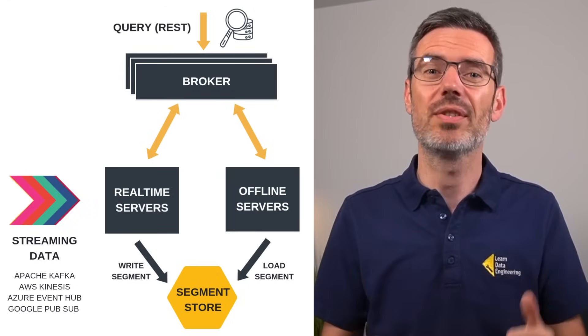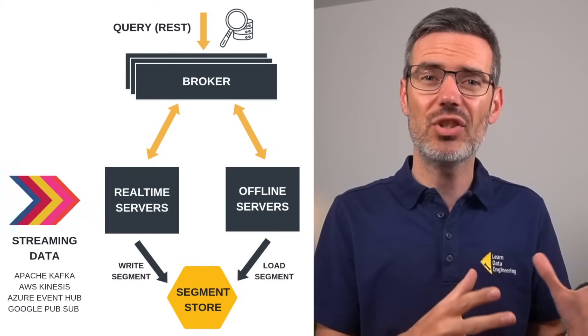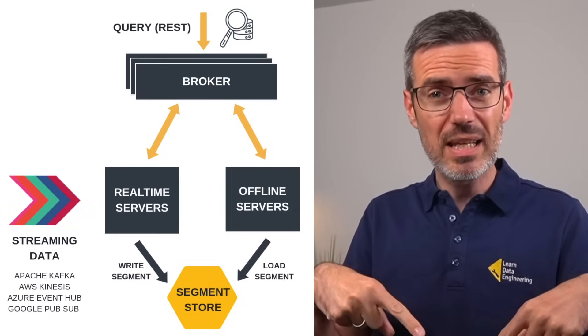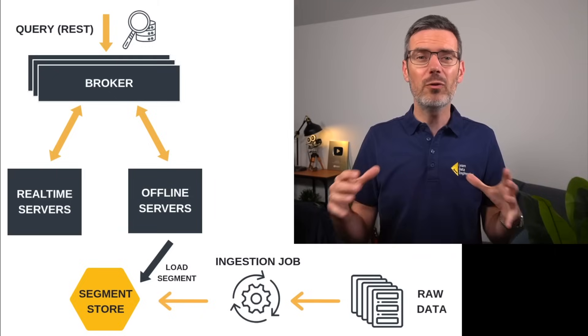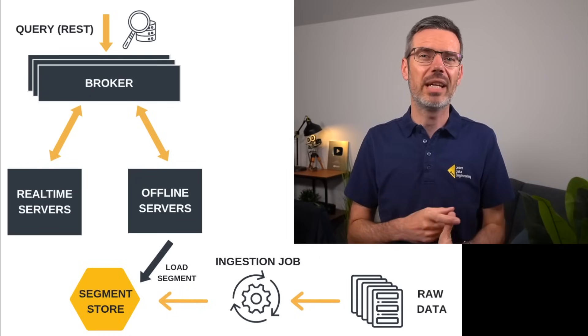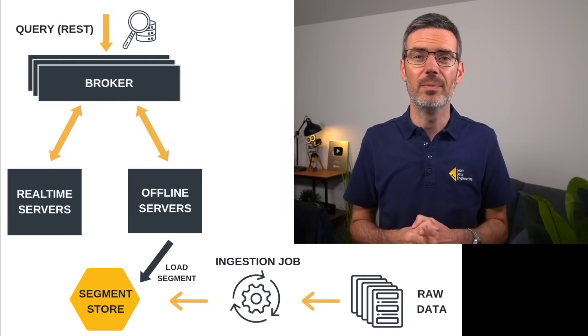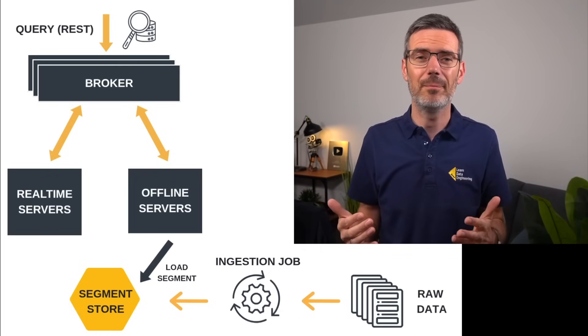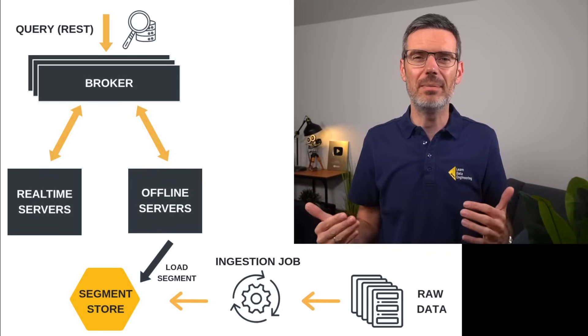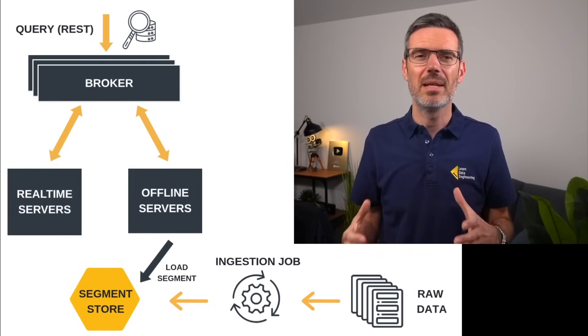In the middle you've got two types of servers. Real-time servers handle streaming ingestion from Kafka or similar sources. As data flows in, Pinot makes it queryable immediately, even before segments are finalized — that's how you get true real-time performance. Offline servers handle batch-loaded data, like Parquet or CSV files sitting in S3, GCS, or Azure. These are pulled into Pinot using ingestion jobs, converted into segments, and then served just like real-time data. Because the server types are specialized, Pinot can optimize each path separately — ingestion and storage stay fast, and the broker unifies it all at query time.